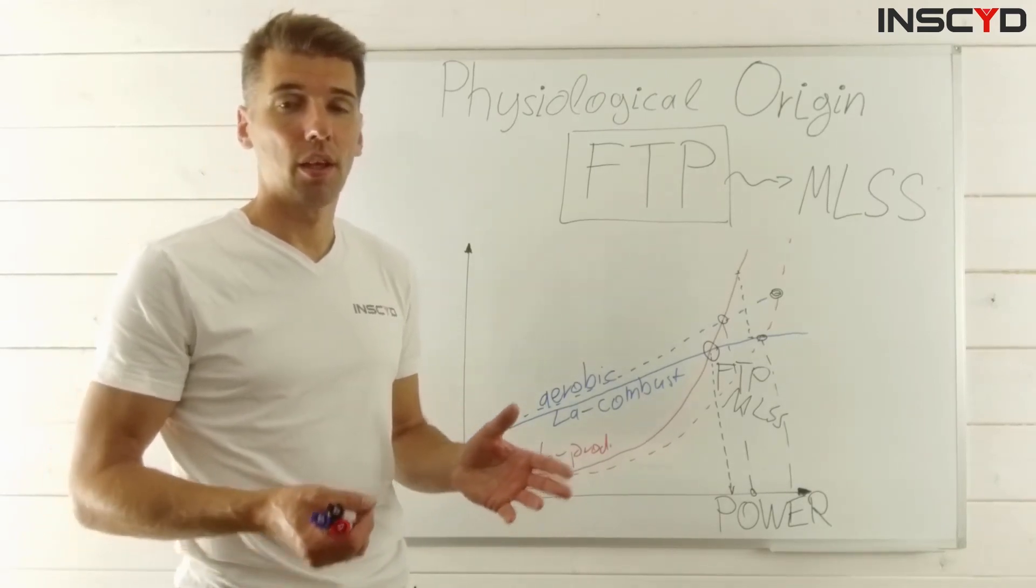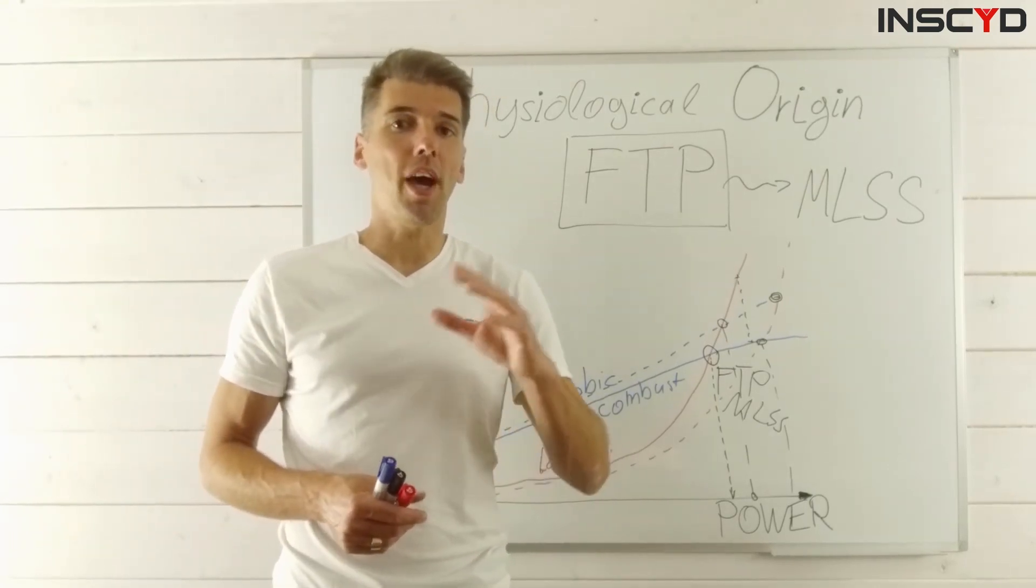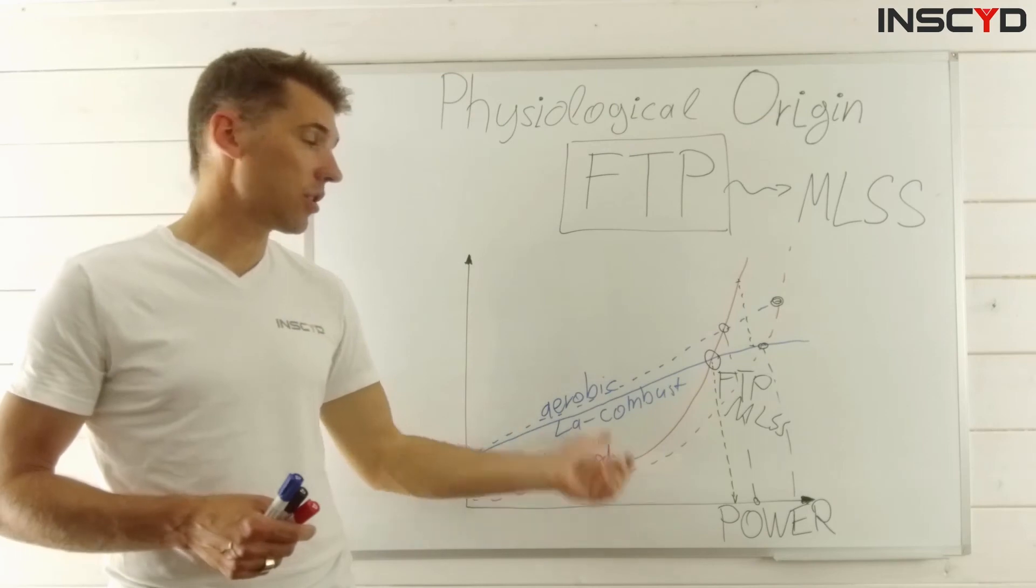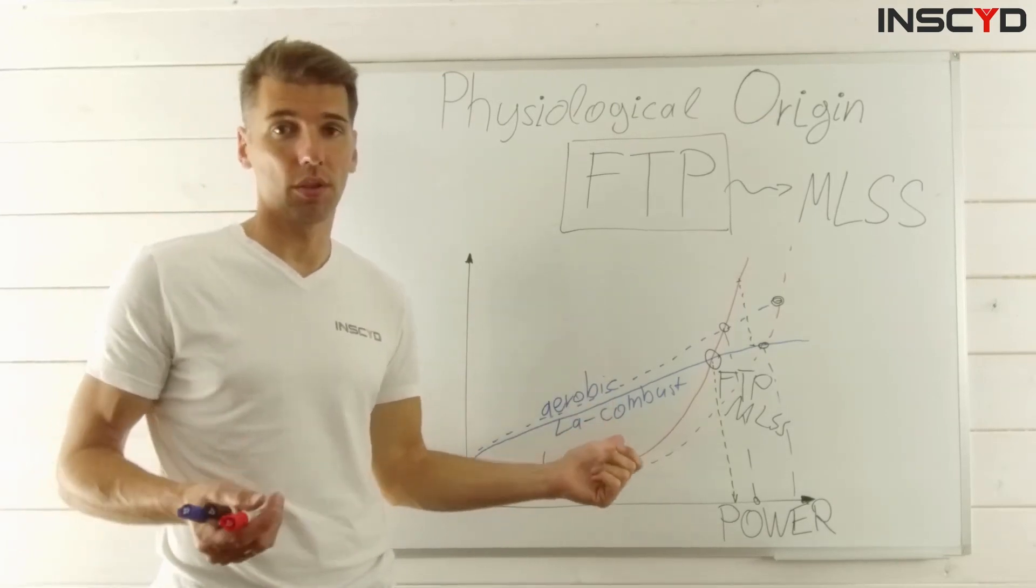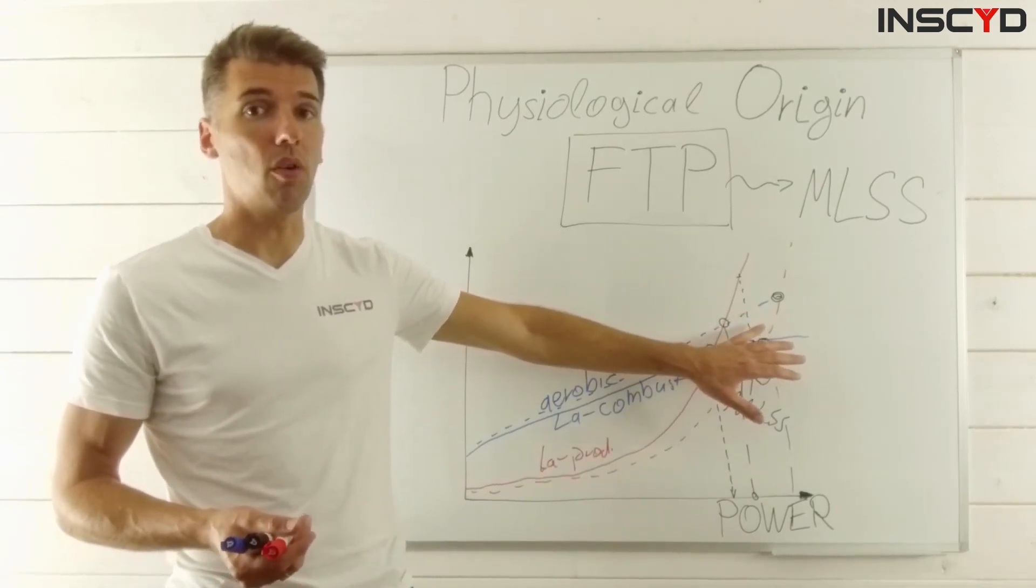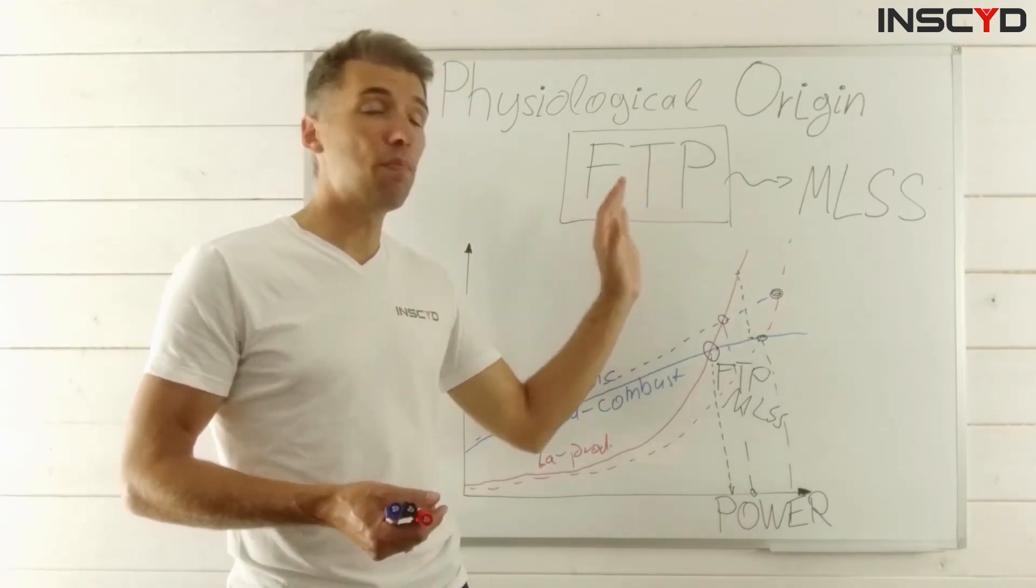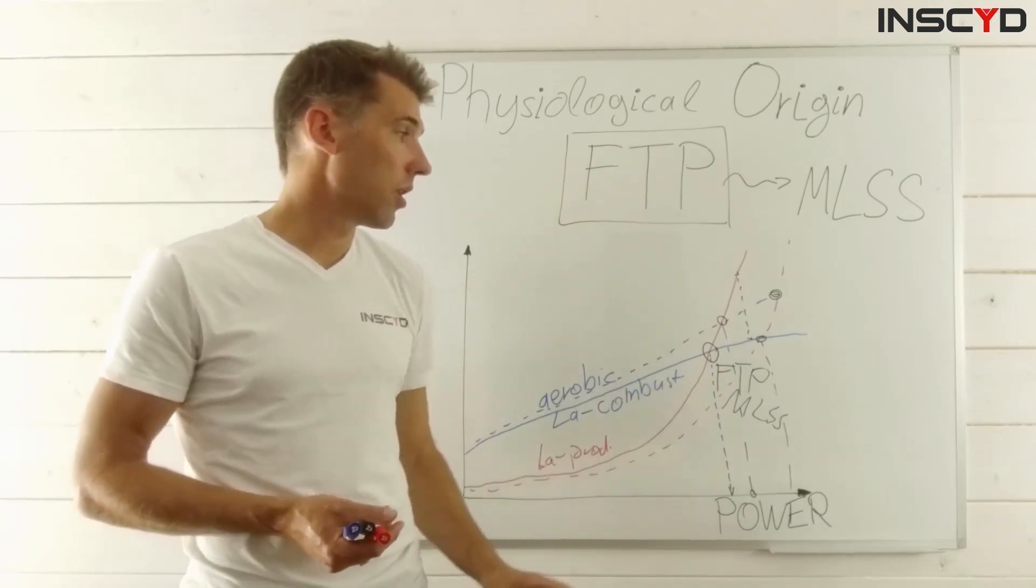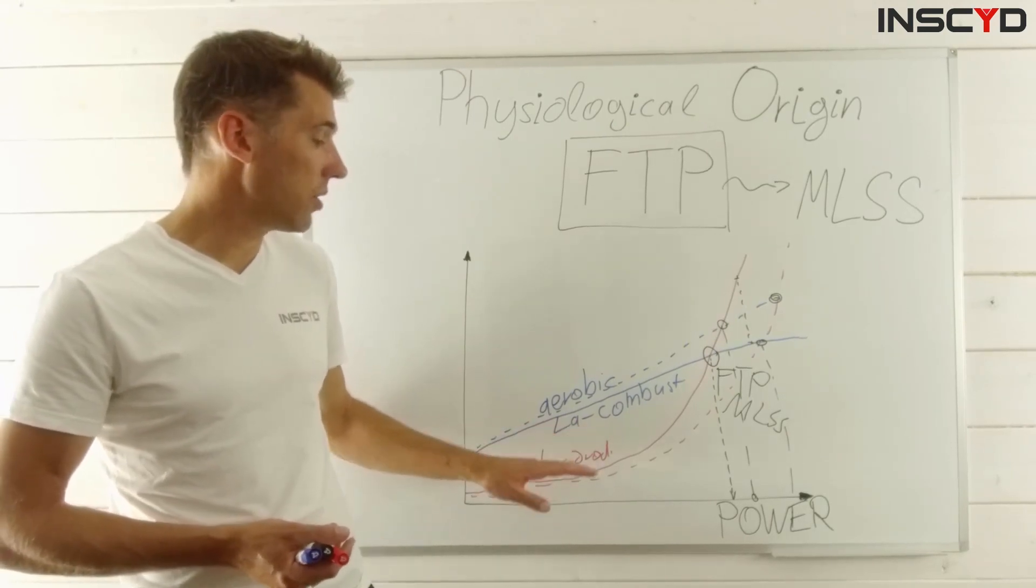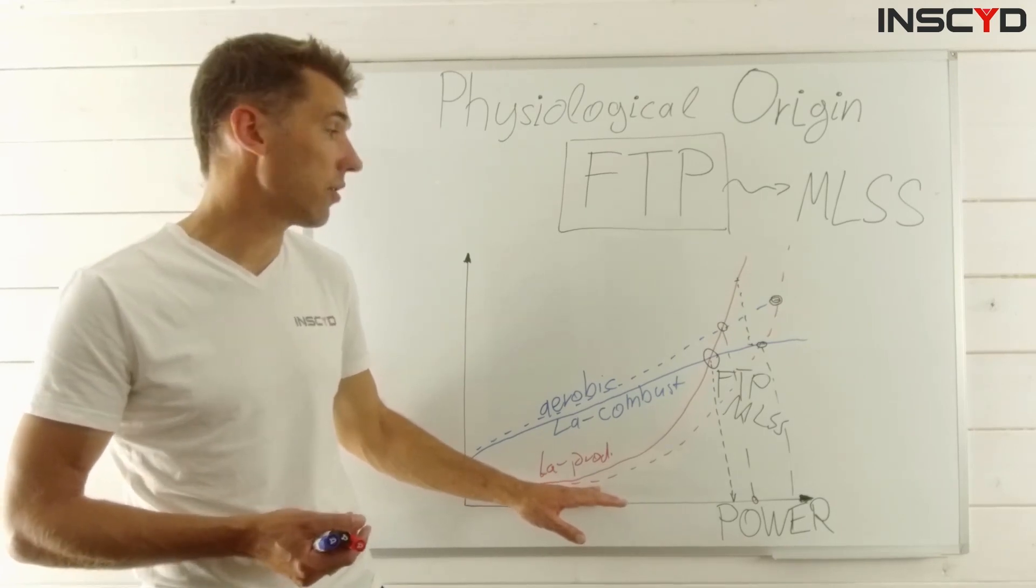So long story short, if you want to increase your threshold power, or maybe more precisely, every time your threshold power really changes up or down by training, one of these two systems has adapted, or both, in either way. This is what determines your threshold power, and this means for your training, if you want to improve, to increase your FTP values, you need to either increase your aerobic metabolism, the capacity of aerobic metabolism, or reduce your lactate production - hence reduce your glycolytic capacity.